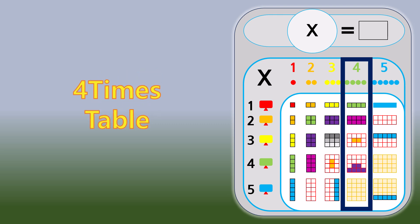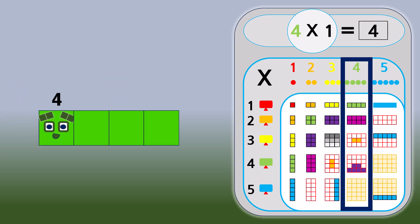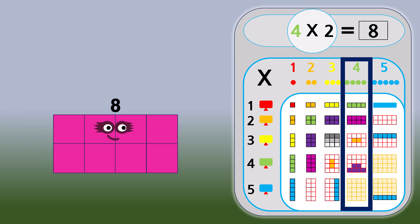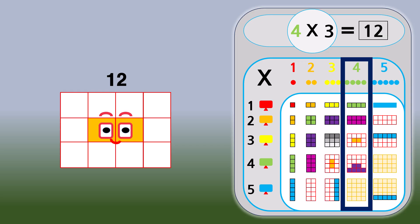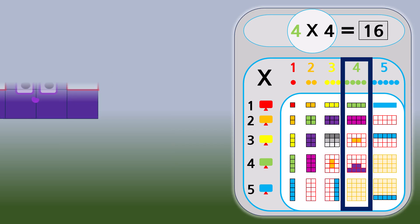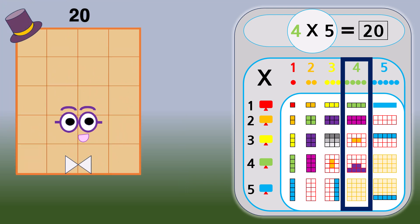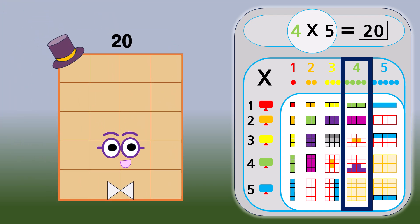4 times table. 4 times 1 equals 4. 4 times 2 equals 8. 4 times 3 equals 12. 4 times 4 equals 16. 4 times 5 equals 20.